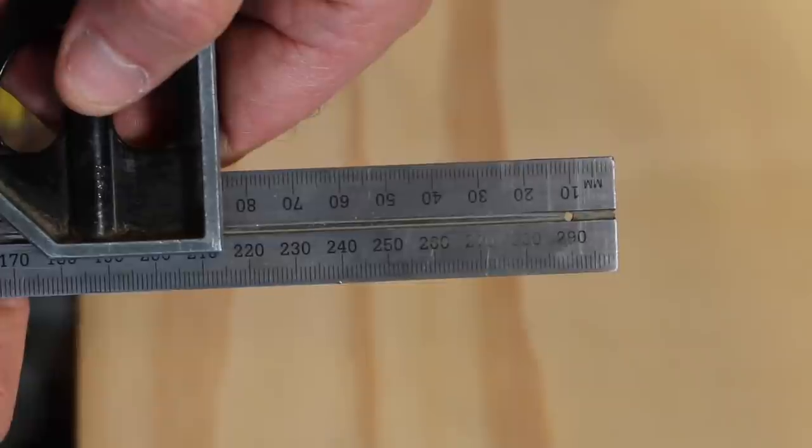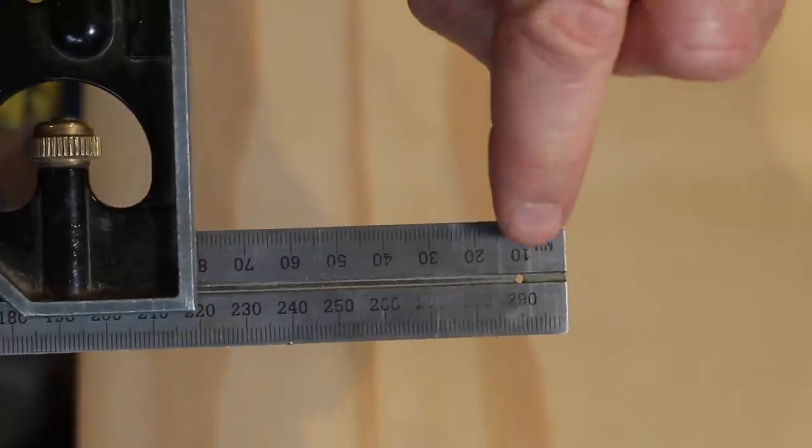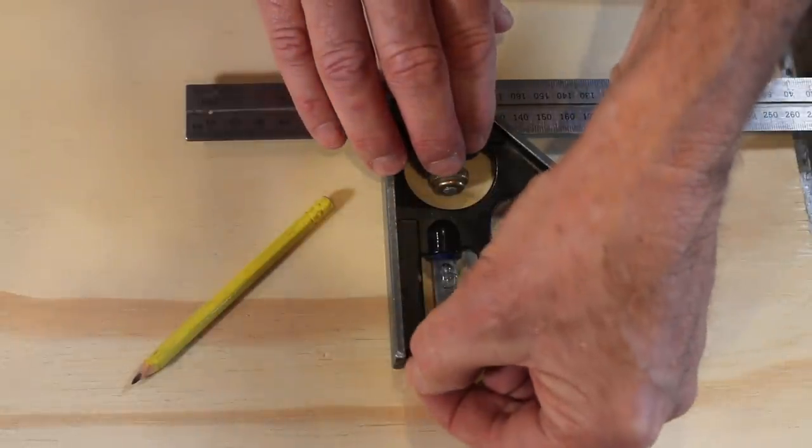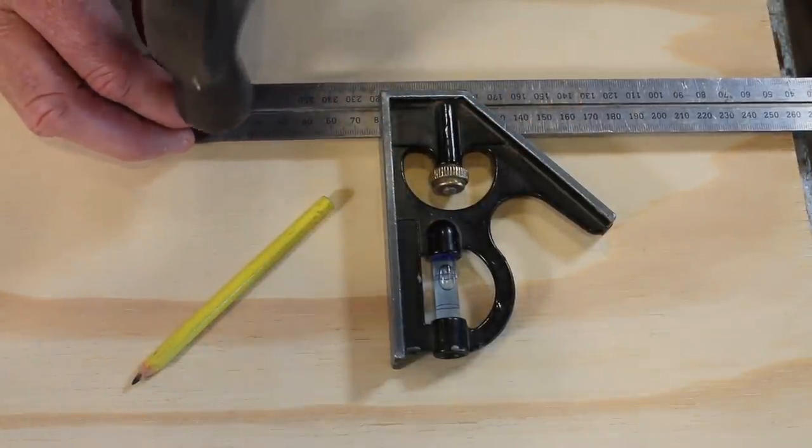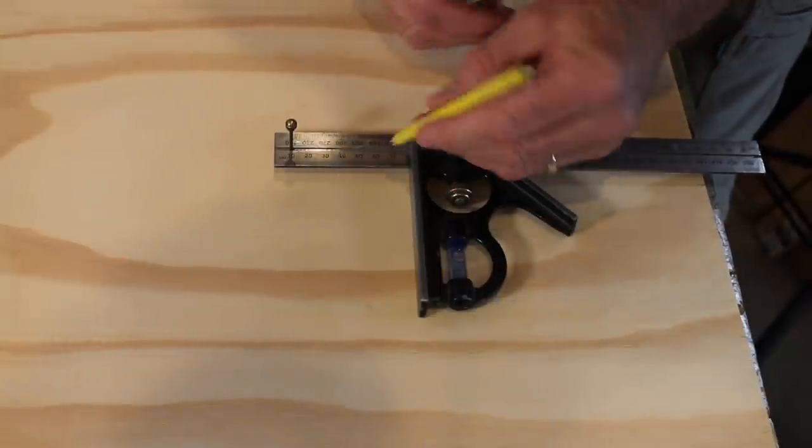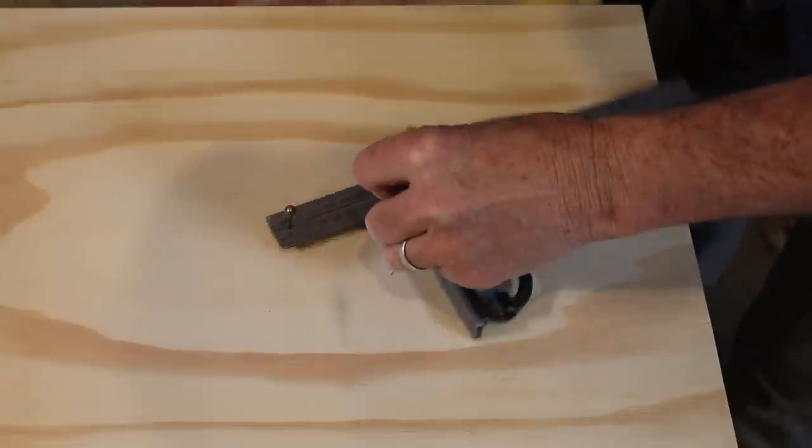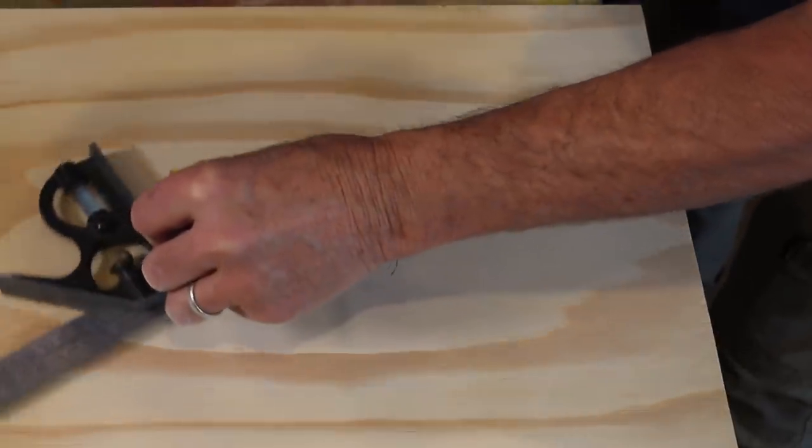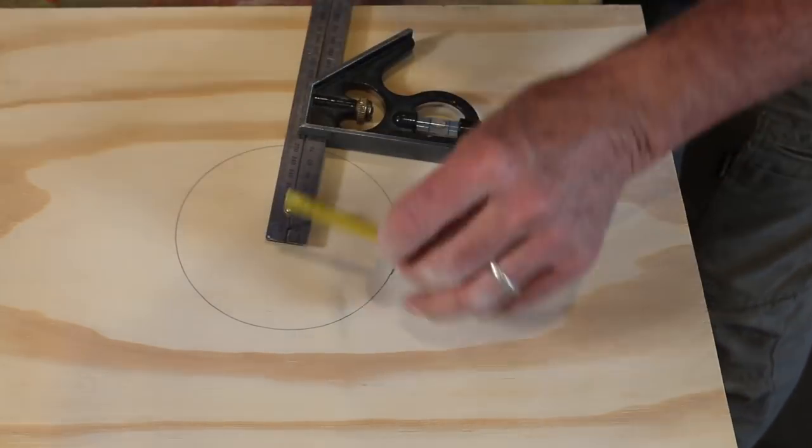Now once again, using our combination square with that hole drilled in the end at the 10 millimeter mark, this is a great tip for marking out a circle. Simply set your combination square to the size of the circle that you want, lock that off, and take into consideration that we're starting at the 10 millimeter mark. Take out our marking scribe from the end, place it through the hole, and lightly tap that into the wood. Then place your pencil tight and hard up against the blade and the handle, and away you go. Now one hand is all you need, and check this out. Beautiful.